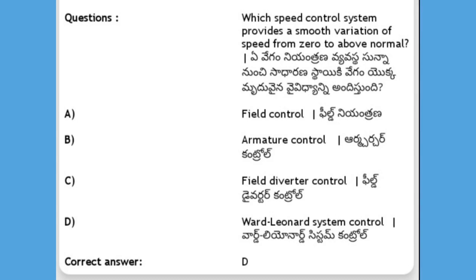Which speed control system provides a smooth variation of speed from zero to above normal? Options: field control, armature control, field diverter control, Ward Leonard system control. The answer is D, Ward Leonard system control.